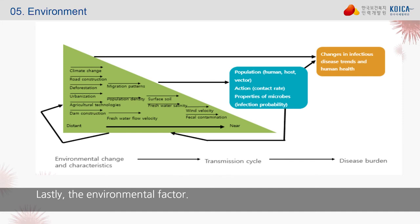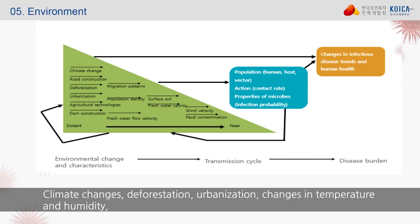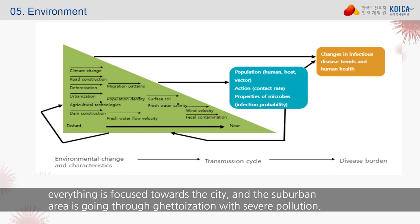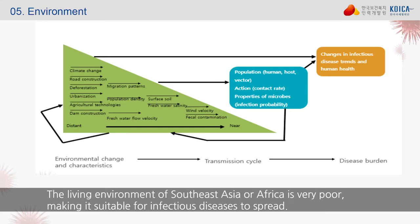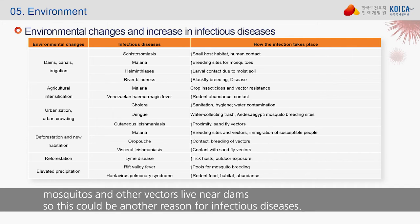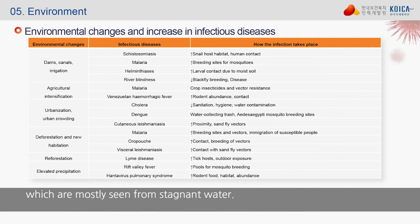The environmental factor is also critical. Most changes have occurred in the Earth's ecosystem: climate change, deforestation, urbanization, changes in temperature and humidity, and global warming. Everything is concentrated in cities, while suburban areas face ghettoization and severe pollution. The living environment of Southeast Asia or Africa is very poor, making it suitable for infectious diseases to spread. Building dams and destroying natural environments — including forests and wild animal habitats — leads mosquitoes and other vectors to live near dams, contributing to infectious diseases.